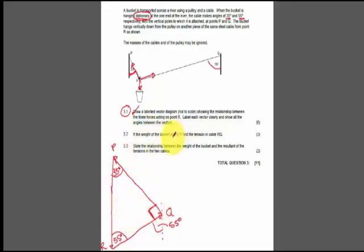Now it says, if the weight of the bucket is 980 Newtons. So if this is 980 Newtons, they want to know what is the tension in cable RQ. So they want to know what is this tension here in cable RQ. So if this is a 90 degree angle, do you agree that this is the hypotenuse?